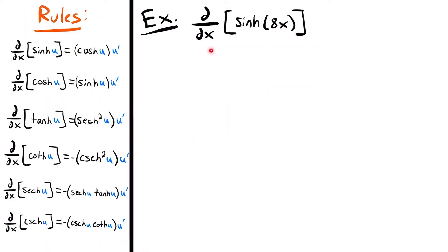Welcome back. Let's start with this example. We want to find the derivative of hyperbolic sine of 8x. We have all of our derivative rules over here for all the different hyperbolic functions. For this specific derivative, we need the derivative of hyperbolic sine, which is: the derivative of hyperbolic sine of some function u is equal to hyperbolic cosine of that same function times the derivative of that function, u prime.